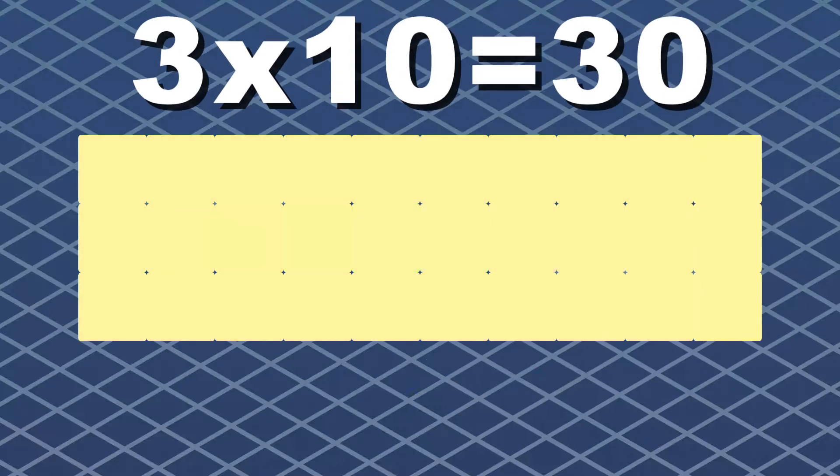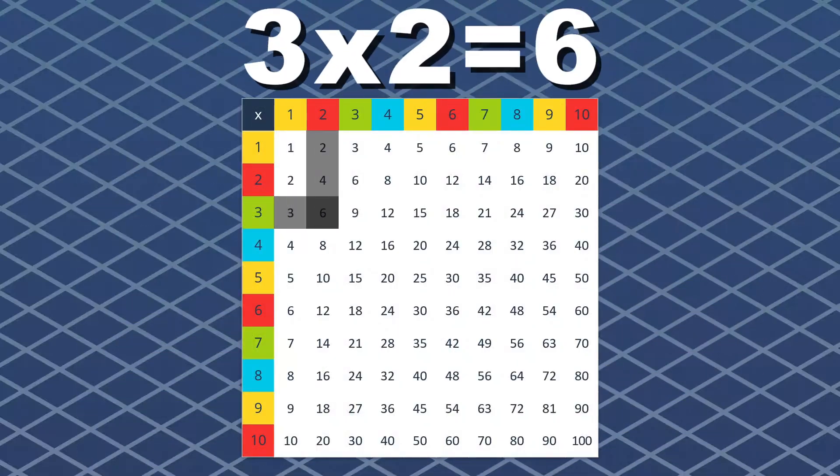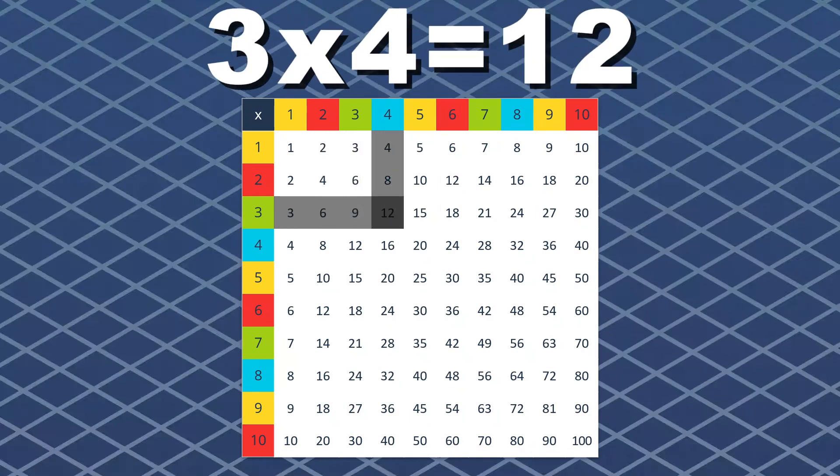3 times 10 equals 30. The end. This is what you see when multiplying by 3.